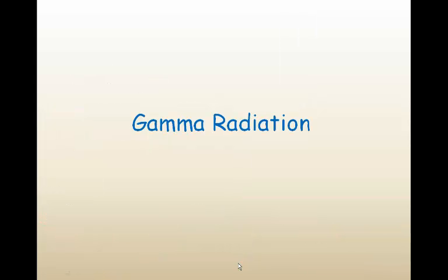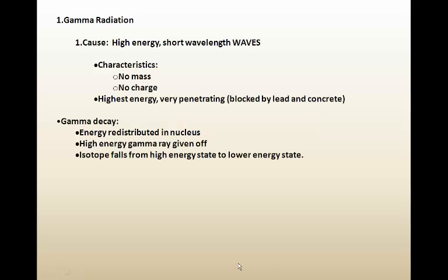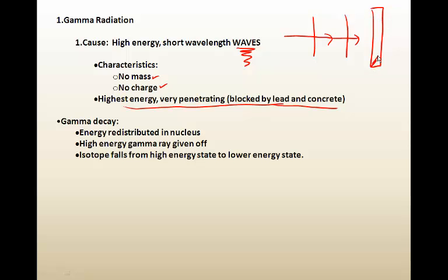Gamma radiation. Gamma radiation is caused by high-energy, short-wave waves. There are actually no particles being produced. And so there's no mass and no charge. The highest energy, very penetrating form of electromagnetic radiation or waves. And it's blocked by lead or concrete. So if we had a piece of paper, it would not stop gamma radiation. If we had a piece of foil, it wouldn't stop gamma radiation. You'd need a nice big thick piece of lead or concrete or even just a lot of soil before that radiation would actually be stopped. So of course this can penetrate our bodies quite easily as well and cause damage to our DNA.